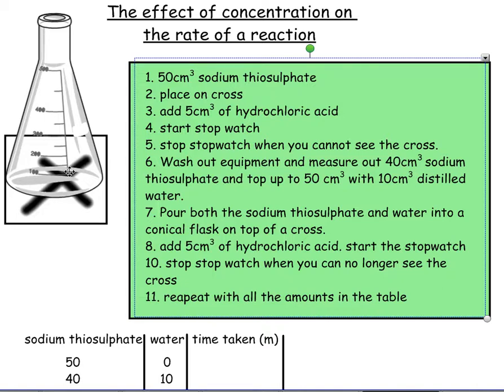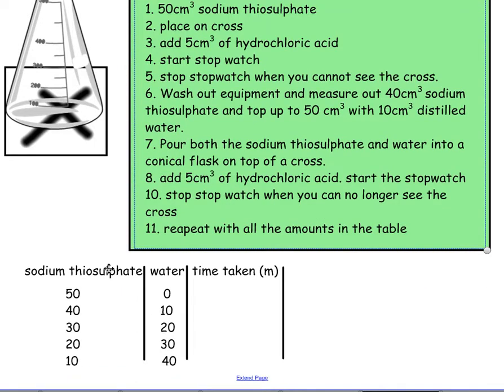So it's an insoluble solid which makes it go cloudy and you can't see the cross anymore. You change the amount or the volume of sodium thiosulfate, and that reduces the concentration of sodium thiosulfate. Really bad table there, no units at all, so that's what not to do because it doesn't tell you anything. 50 what, gallons? I don't know. Anyway, so this one is the most concentrated because it's not diluted by the water at all, and then they get progressively more and more diluted.